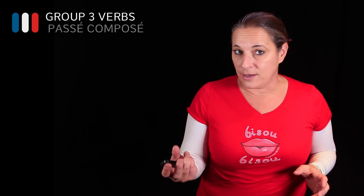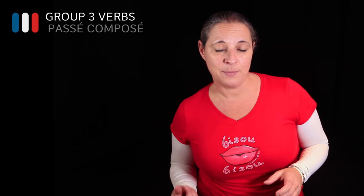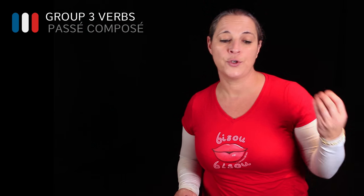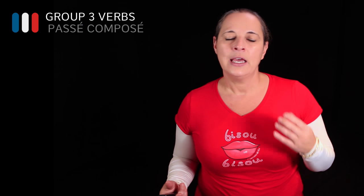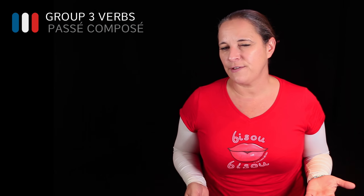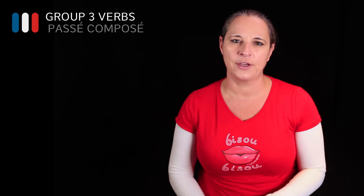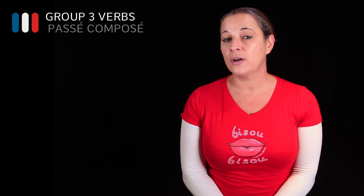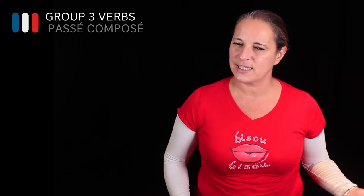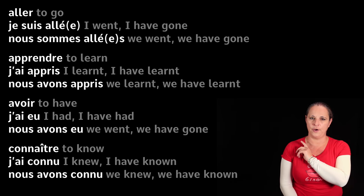What I'd like to do is give you 25 main third group irregular verbs and show you what they look like in their past participle form — or participe passé, as we say in French. For example, in English you could say 'I have eaten,' where 'eaten' is the past participle of the infinitive verb 'to eat.' So let's have a look at the first verb.